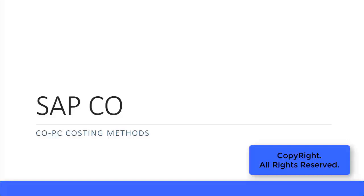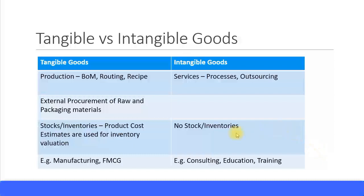In this presentation we will look at some costing methods. We will briefly touch upon tangible goods and intangible goods. Examples of tangible goods are manufacturing or FMCG — fast moving consumer products — whereas intangible goods are more like services such as consulting, education, training, banking, and energy providers.